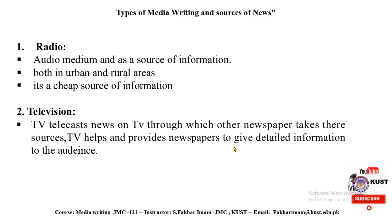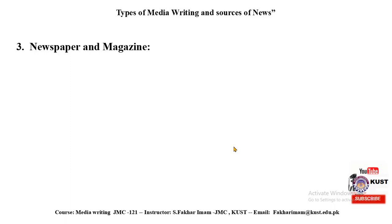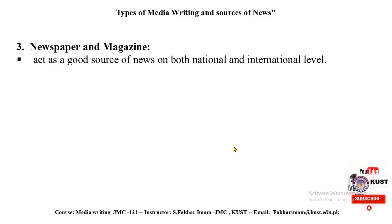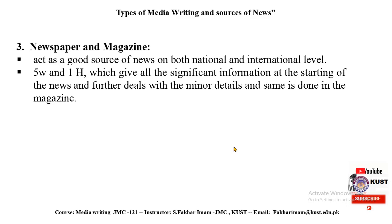Our third source is newspapers and magazines. Newspapers and magazines also act as a good source of news. Newspapers, at both the national and international level, provide the best information in detail. The newspaper has five W's and one H, which gives all the significant information at the start of the news, and further deals with the minor details — the same is done in magazines.